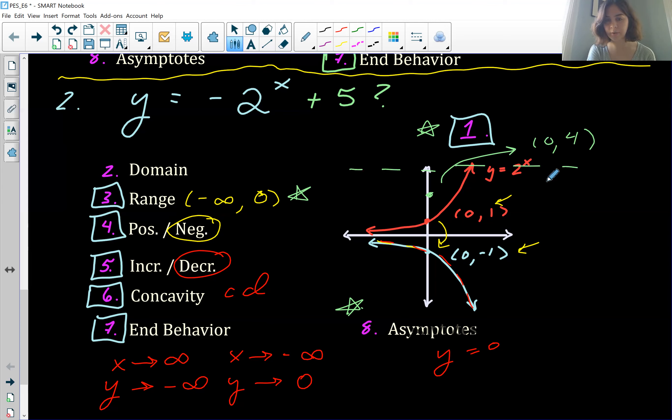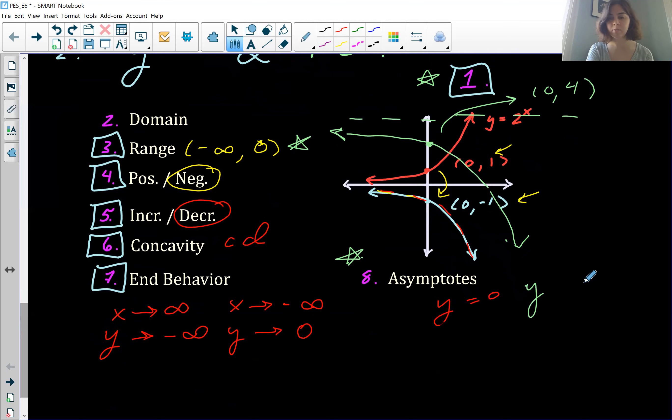Then that asymptote is going to shift up five. So our asymptote is going to be right here now. And our graph is going to approach that. It'll look something like that. So our new asymptote would be at y equals five. And then so for our range, instead of going from negative infinity to zero, we would go from negative infinity to five. And it would be the same sort of thing if we had subtracted five.